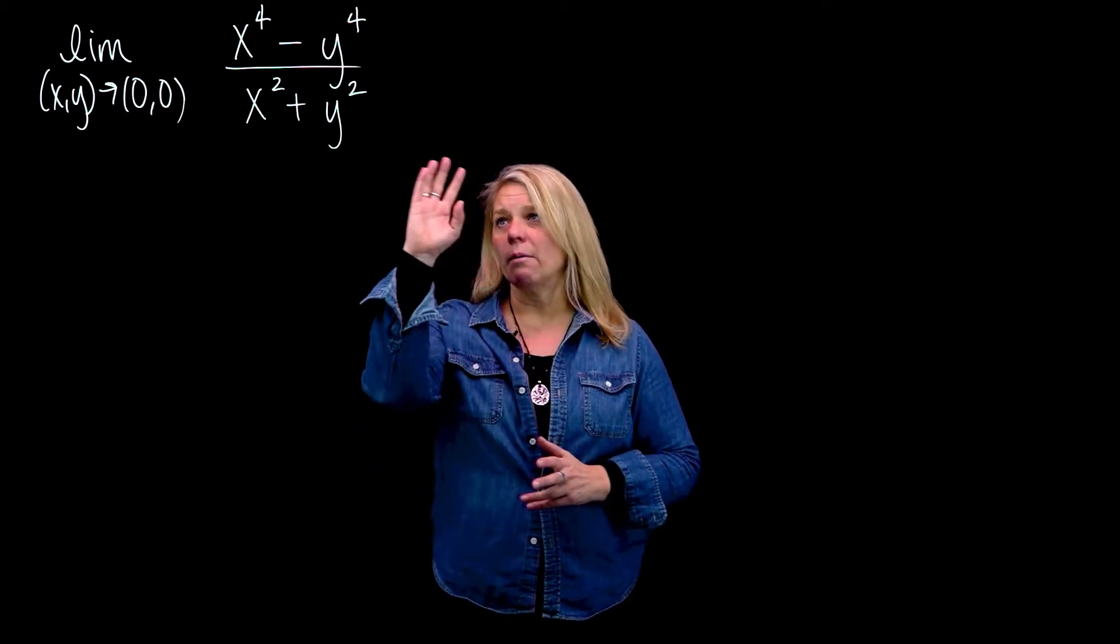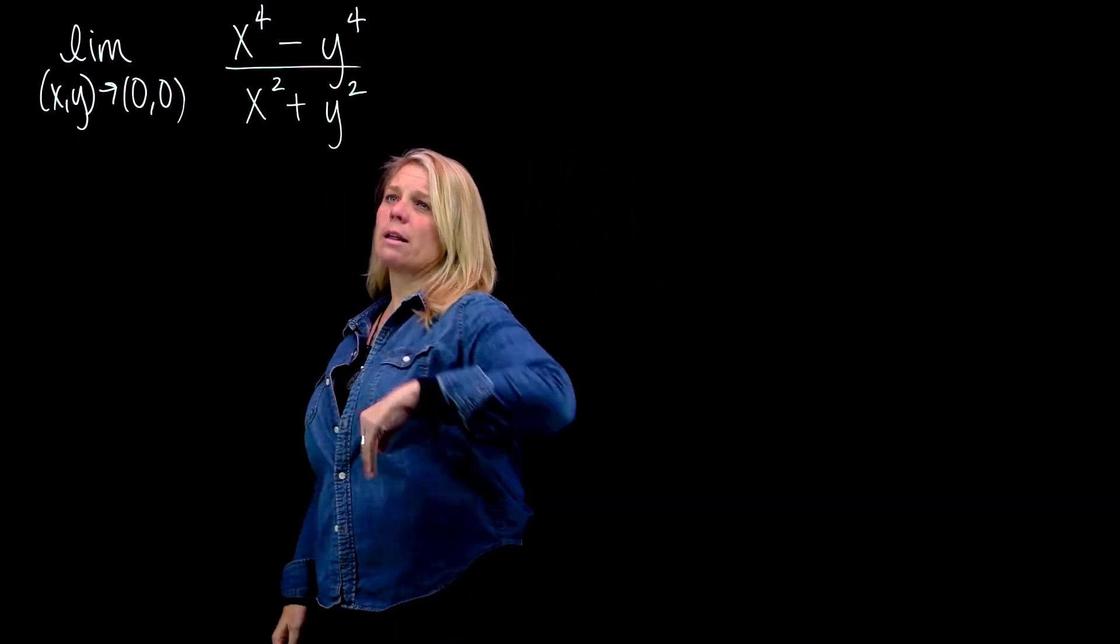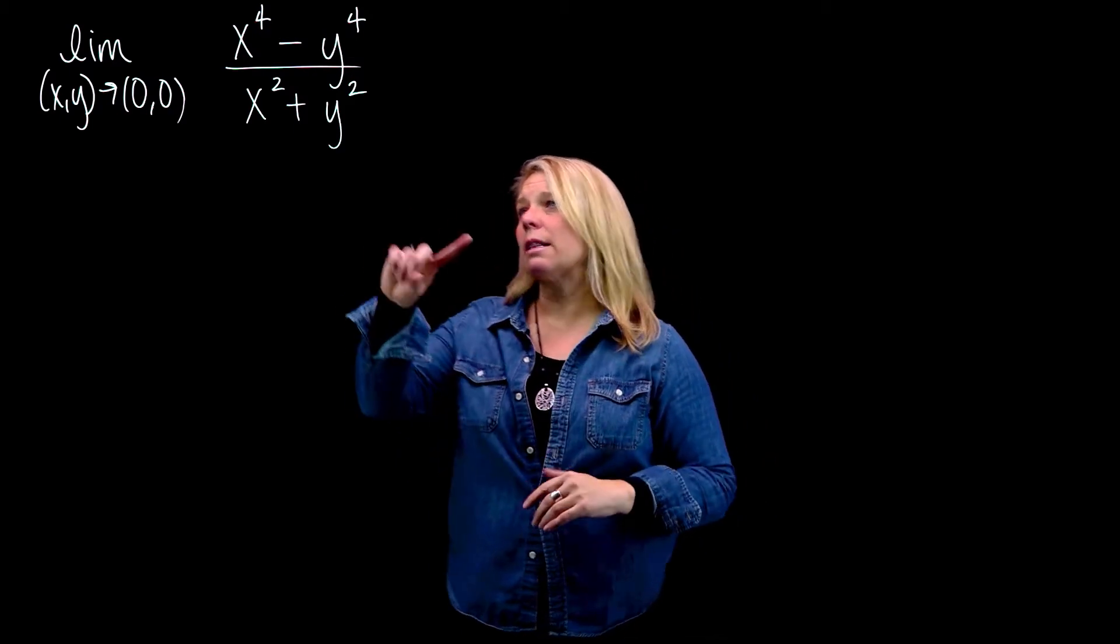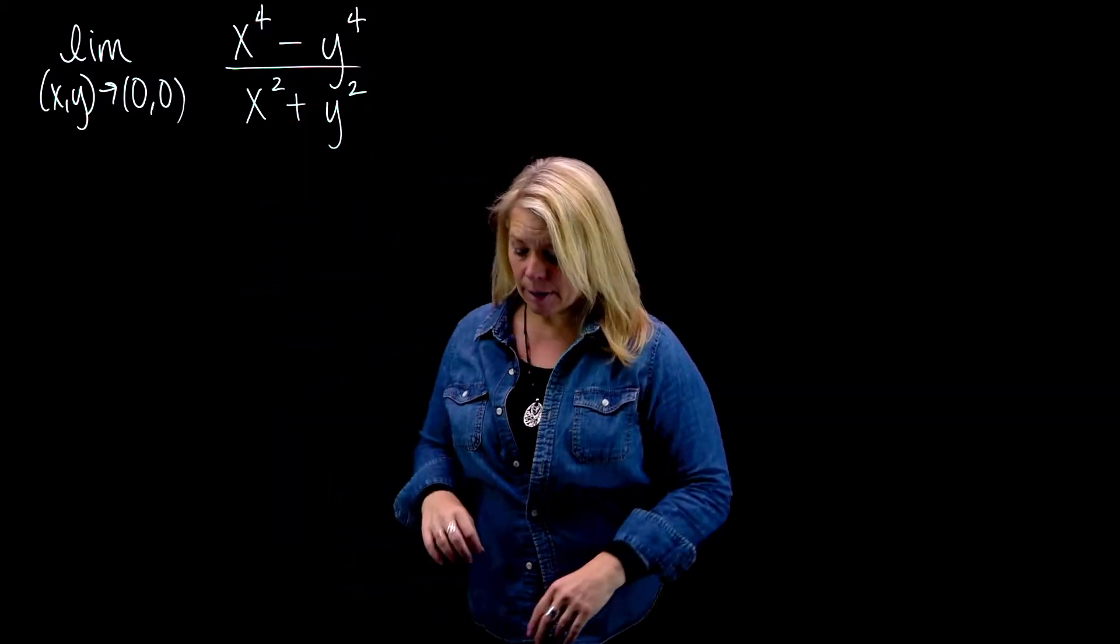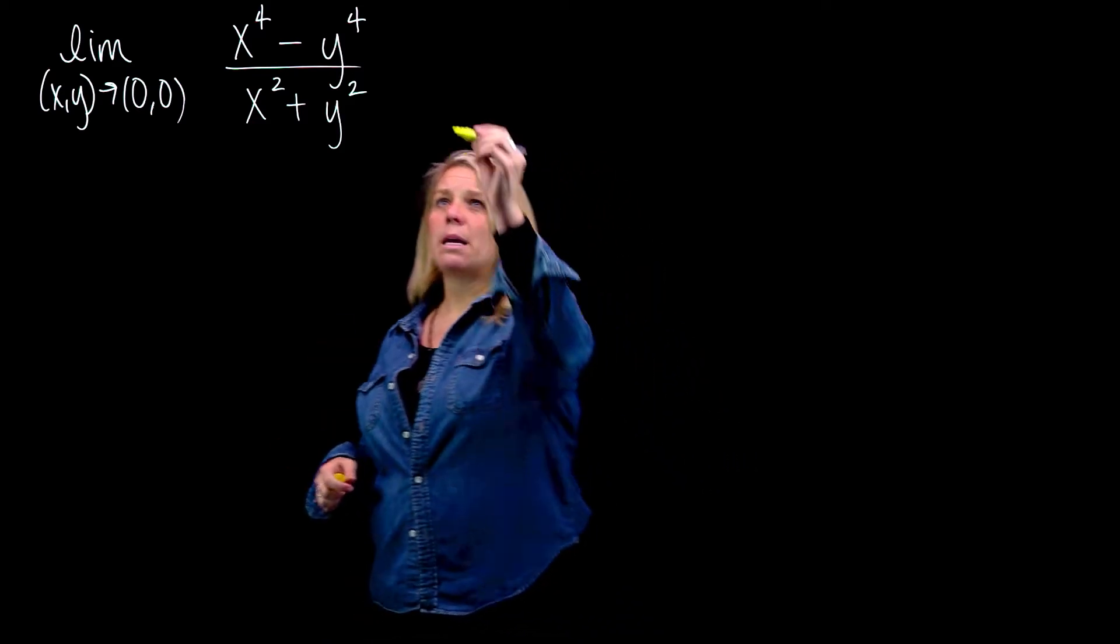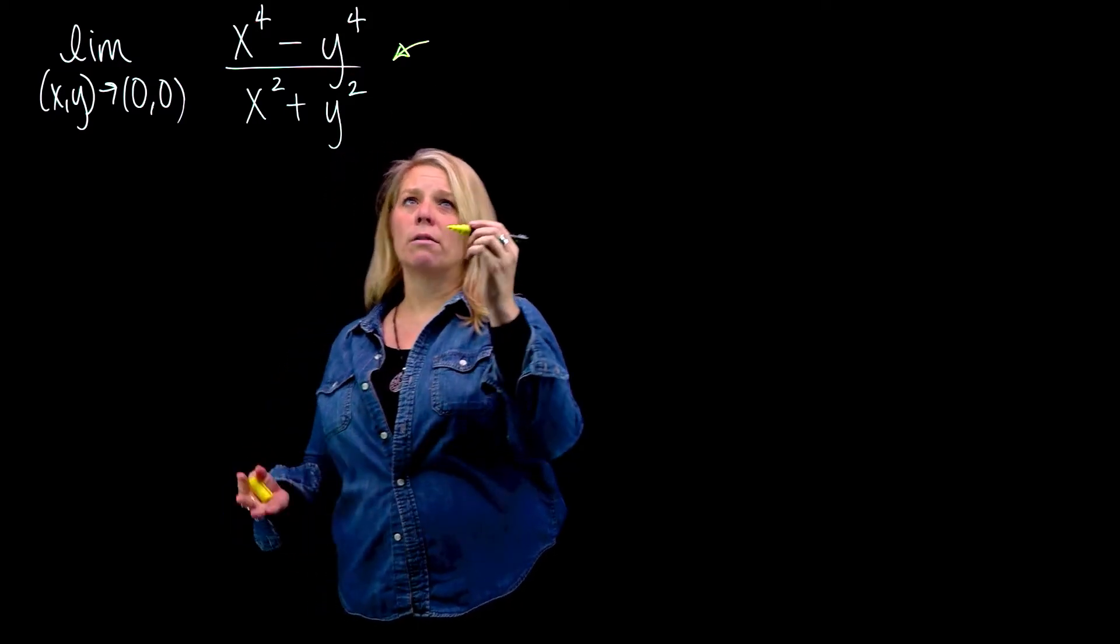We have here a function f(x,y) equals x to the fourth minus y to the fourth over x squared plus y squared. You should be able to look at that function and think about the domain. The domain is going to be everything except the point (0,0), the origin.